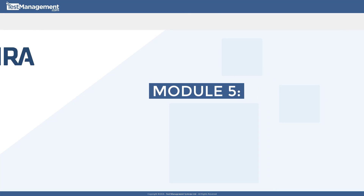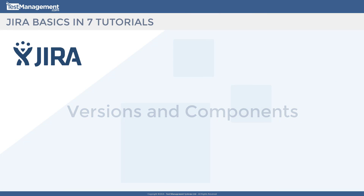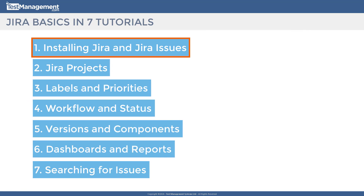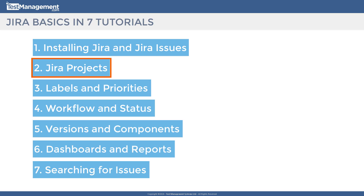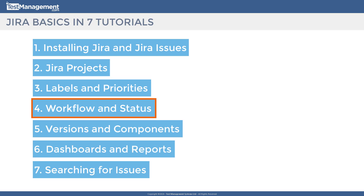Jira Basics, Module 5: Versions and Components. In modules 1, 2, 3, and 4 we looked at installing Jira, the concept of Jira issues and projects, and we've examined what labels and priorities are and how we can use those to categorize our issues. In module 4 we looked at workflow and status and how we can transition our issues through a workflow and how those issues have different status values.